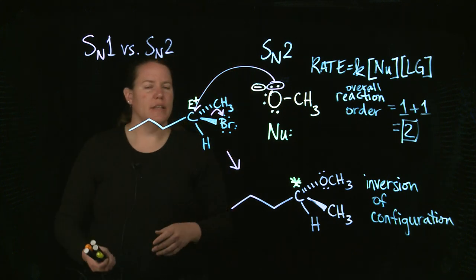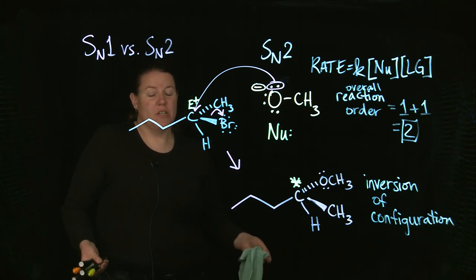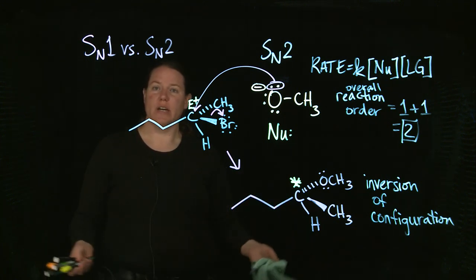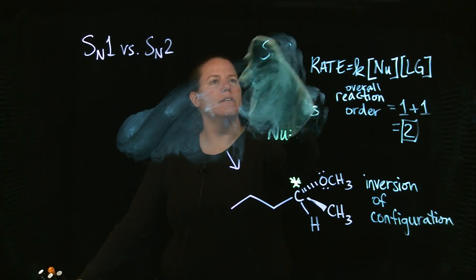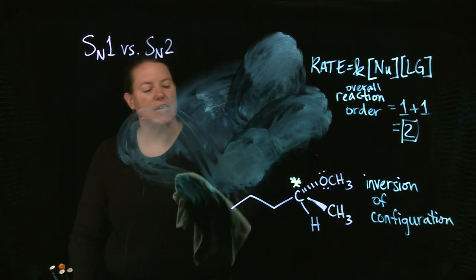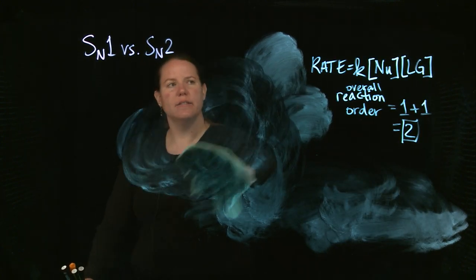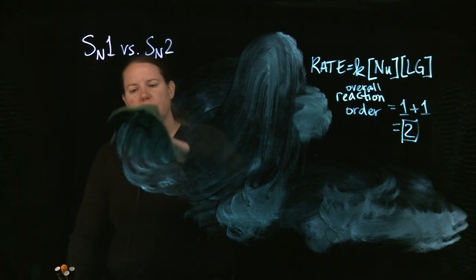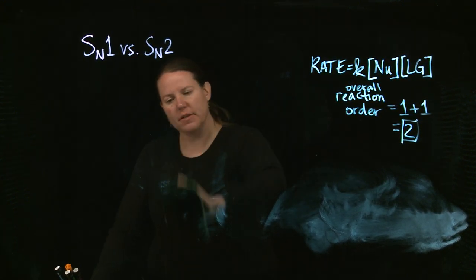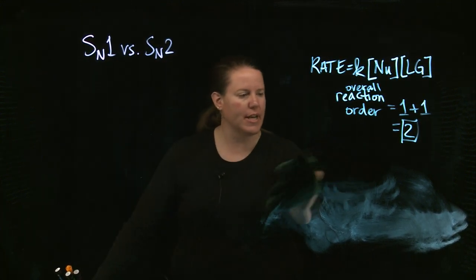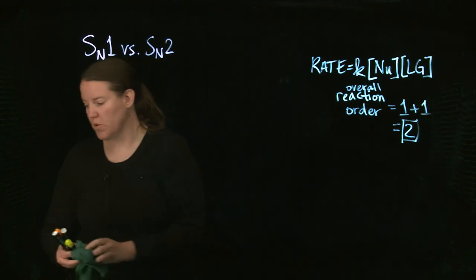How is this different than the SN1 reaction? The twos — SN2 and E2 — both actually happen in one step; they're a concerted reaction. The 'two' talks about their kinetics, their overall reaction order, not about the number of steps. The only difference between E's and SN's is that with E's it's an elimination reaction, which means you form a multiple bond — like a double or triple bond — where there wasn't one to begin with. SN's replace something: in our original reaction you originally had bromine and you replaced it with a methoxy group, OCH3.